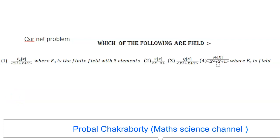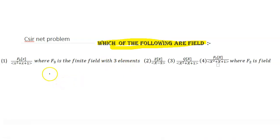Hello friends, today I want to discuss a problem based on CSIR NET. This problem is very interesting, that's why I want to solve it. The question asks: which of the following are fields? We see F3[x] divided by x²+x+1, where F3 is the finite field with three elements. So F3 equals {0, 1, 2}, which is the same as Z3.